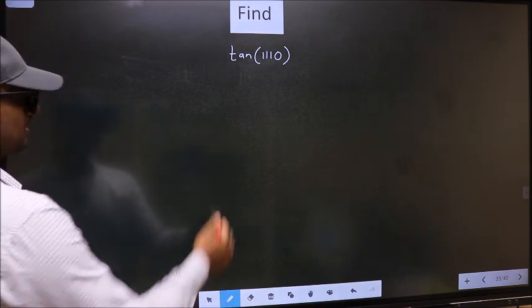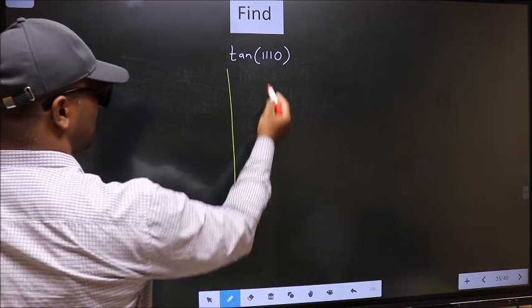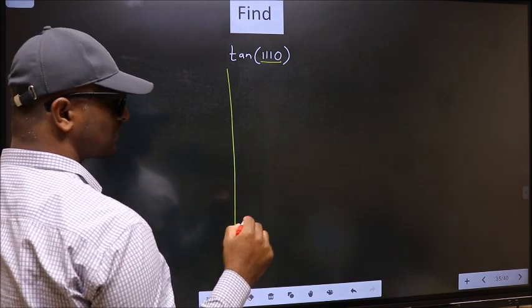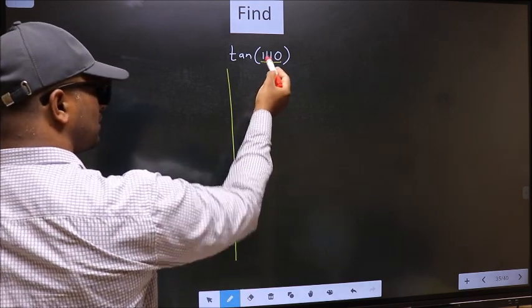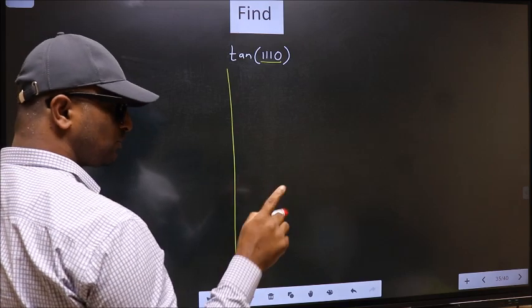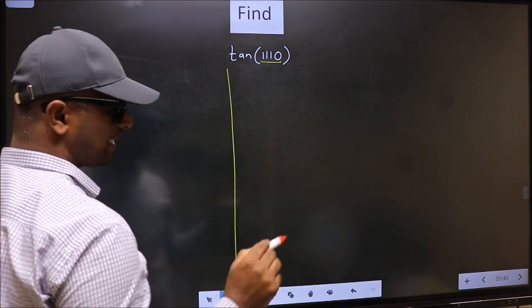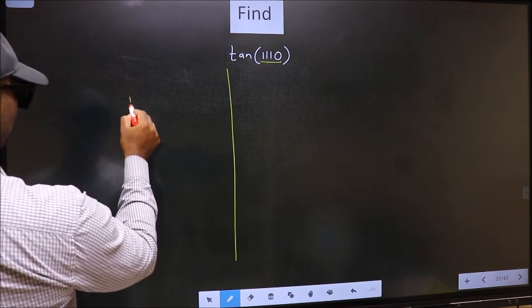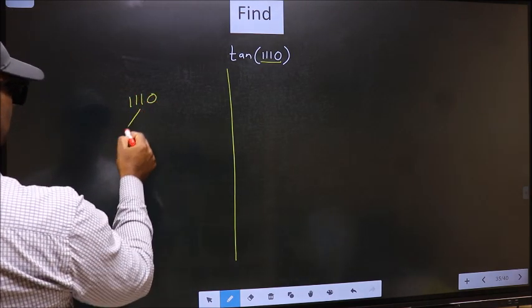See, here we have 1110. Now you should check 1110 lies between which two multiples of 180. What I mean is 1110 lies between